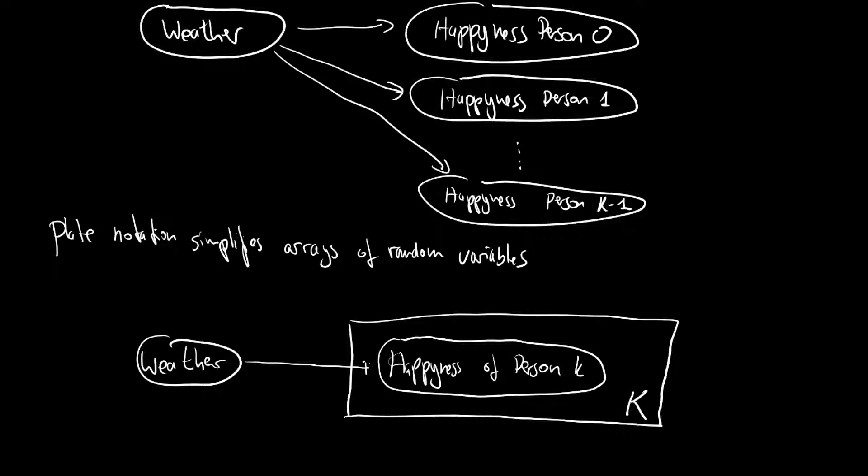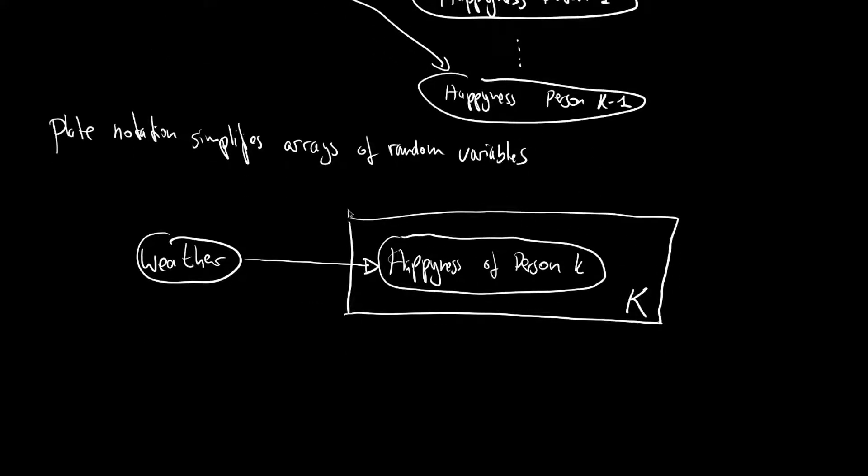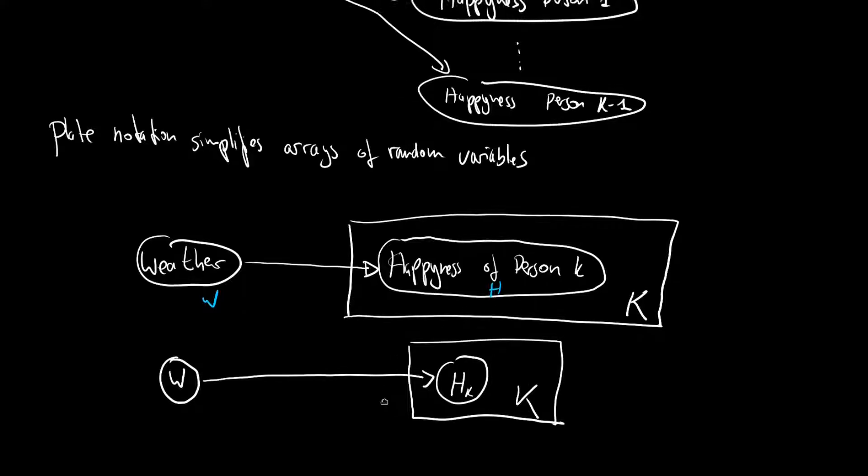And this is equivalent. And if we use a shorthand notation, call this a w, and call this an h, then we have the w bubble goes to the h bubble. And not just any h bubble, but h bubble with index k. And this bubble is repeated k times.